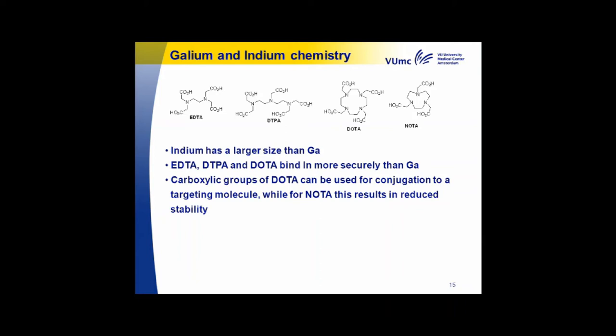The chelates for gallium and indium are depicted here. Because indium is a little bit larger than gallium, gallium works best with NODAGA, as was also mentioned. It can work with DOTA but requires higher temperatures, while indium is a perfect match with DOTA. For acyclic ligands, there are two types of chelates suitable for indium, but macrocyclic ligands provide better stability.